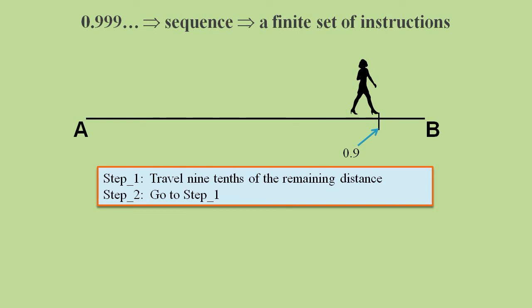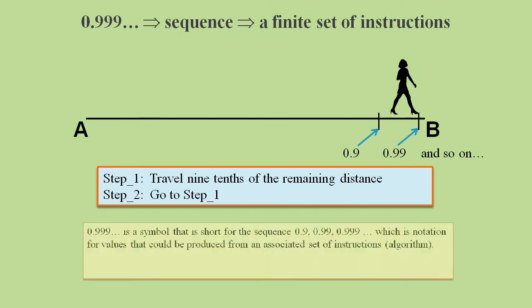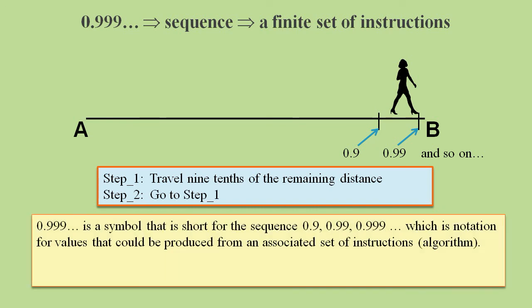Step 2 simply tells us to go back to step 1. This time, nine-tenths of the remaining distance will take us to the position 0.99. And if we keep following the algorithm, we will be following the 0.9 recurring sequence of values. And so 0.9 recurring is short for the sequence 0.9, 0.99, 0.999, and so on, which are values that could be produced from an associated algorithm.